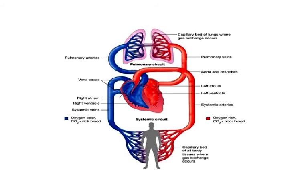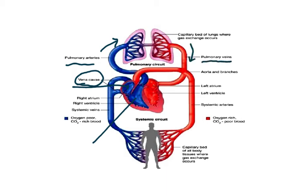As a recap: the right atrium receives deoxygenated blood from the vena cavae from both the upper and lower parts of the body. The pulmonary artery then carries this deoxygenated blood to the lungs where oxygenation takes place. Oxygenated blood returns through the pulmonary veins to the left atrium, passes into the left ventricle, and is pumped out through the aorta — the largest artery of the body — to the entire body, before being returned through the vena cavae.